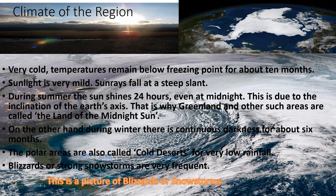Climate of the region: very cold. Temperatures remain below freezing point for about 10 months of the year. Sunlight is very mild — sun rays fall at a steep slant. During summer, the sun shines 24 hours, even at midnight, due to the inclination of the Earth's axis. This is why Greenland and other such areas are called the land of the midnight sun. During winter, there is continuous darkness for about six months. The polar areas are also called cold deserts due to very low rainfall. Blizzards or strong snowstorms are very frequent.